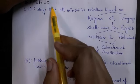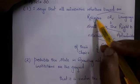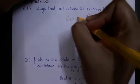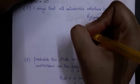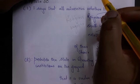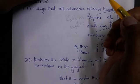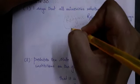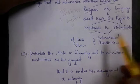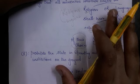Now let's see what Article 30 says. Article 30 ka jo clause 1 hai, wo kehta hai that all minorities, whether based on religion or language — yaani ki yahaan par do tarhe ki minorities ki baat ho rahi hai: religious ya linguistic — shall have the right to establish and administer educational institutions of their choice. Please remember this for your competitive exams, as a vital MCQ: Article 30 ke andar kitne tarhe ki minorities ki baat ki gayi hai — the answer is two.